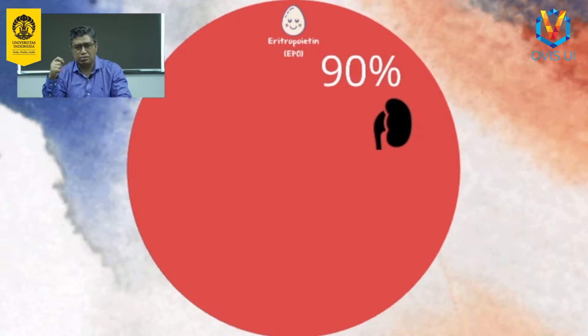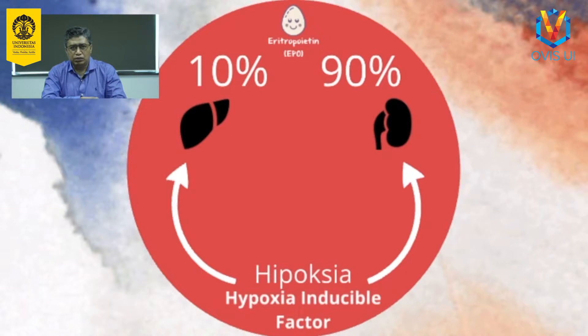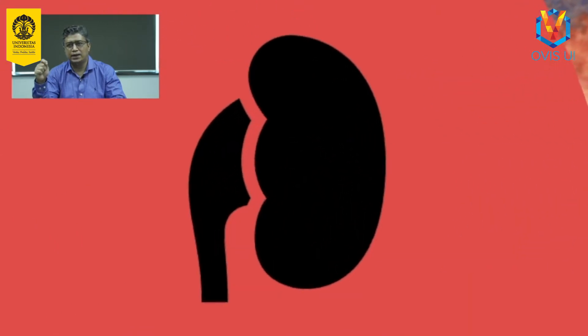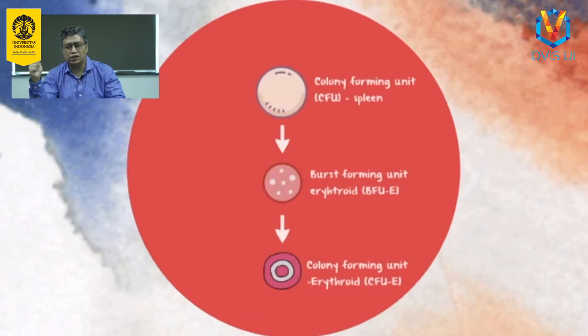Proses diferensiasi progenitor eritroid menjadi prekursor eritroid dipengaruhi oleh eritropoitin atau EPO. EPO merupakan hormon glikoprotein yang dihasilkan oleh sel peritubular ginjal sebanyak 90% dan liver sebanyak 10%. Produksi EPO distimulasi oleh kadar oksigen dalam ginjal. Kondisi yang menyebabkan gangguan penyampaian oksigen di jaringan seperti anemia atau kelainan struktur hemoglobin menyebabkan hipoksia. Hipoksia menginduksi sintesis hypoxia inducible factors (HIF1-α dan β) yang meningkatkan produksi EPO. HIF juga meningkatkan absorpsi besi, menurunkan sintesis hepsidin, meningkatkan produksi reseptor transferin, dan memicu angiogenesis. EPO menstimulasi eritropoiesis dengan cara meningkatkan jumlah progenitor yang berkomitmen pada galur eritroid, mempersingkat waktu pembentukan normoblast dengan menstimulasi CFUE dan BFUE, dan mempercepat pelepasan retikulosit dari sumsum.